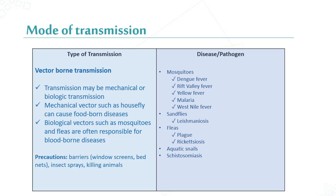Finally, the mode of transmission for vector-borne disease: transmission may be mechanical or biological. The mechanical vector, such as the housefly, can cause foodborne disease. The biological vector, such as mosquitoes and fleas, is often responsible for blood-borne disease. Precautions are mainly by barrier measures like window screens and approved insecticides.